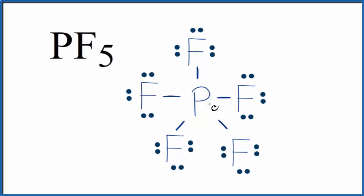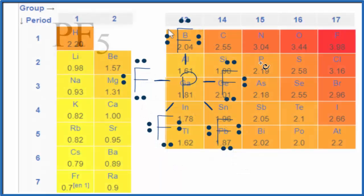What we want to look at is the electronegativity difference between phosphorus and fluorine. So here's phosphorus, 2.19, and then fluorine, 3.98.